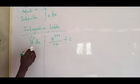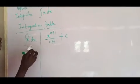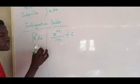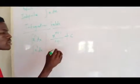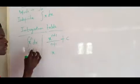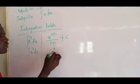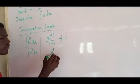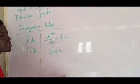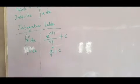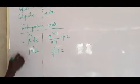So if I have an example like the integral of X raised to power 3 dx, my answer would be X^(3+1) / 4, which is X^4 over 4 plus C. Do you get that now? Alright, so this is the first one.